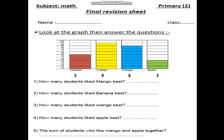Now we will start to answer the questions. How many students like mango best? From the graph, we will count and write under mango — 9. The number is 9 students. How many students like banana best? From the graph, 5 students like banana.